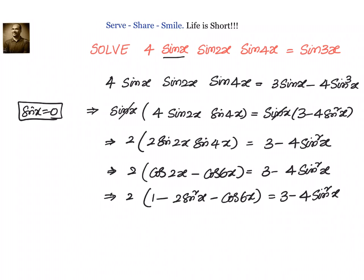Now, let us open the bracket and see whether we can cancel the sin squared x term. In the next step, we will have 2 minus 4 sin squared x minus 2 cos 6x equals 3 minus 4 sin squared x. We can cancel 4 sin squared x.